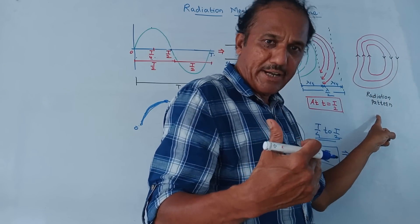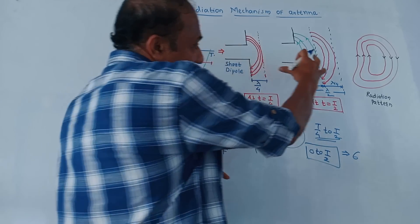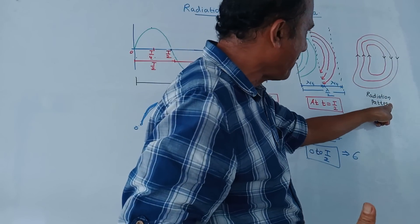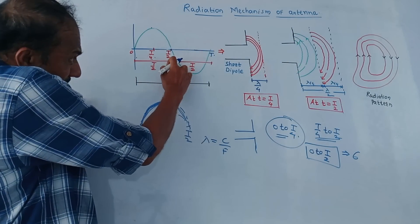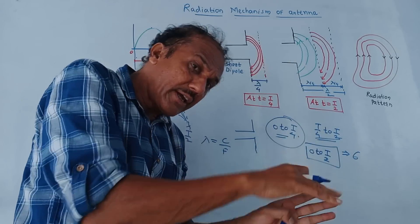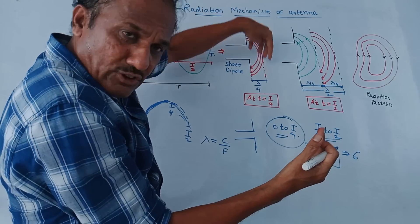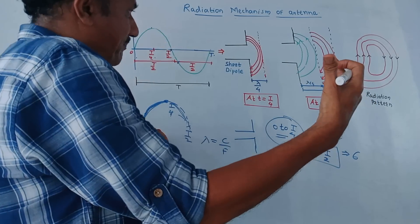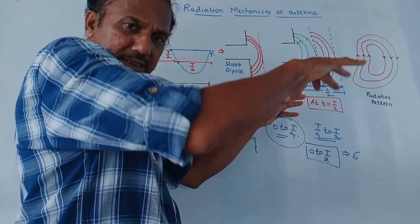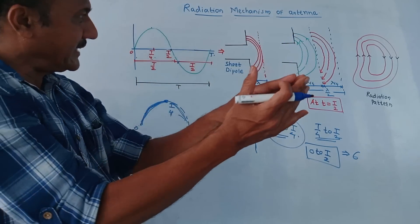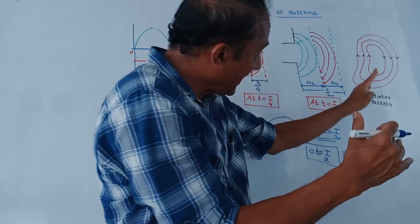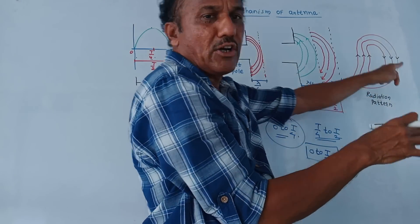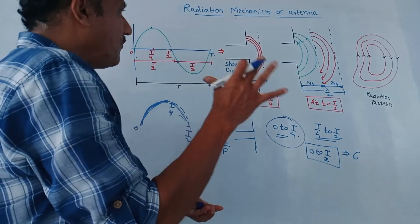The separated lines of force form a structure called the radiation pattern. In the negative half cycle, the same process repeats but in the opposite direction — in the next quarter period the lines will be in upward direction, then in the next quarter period downward, and again a radiation pattern is produced. If you continuously apply or feed this waveform to the short dipole, the radiation will be continuous. This is about the radiation mechanism of an antenna.